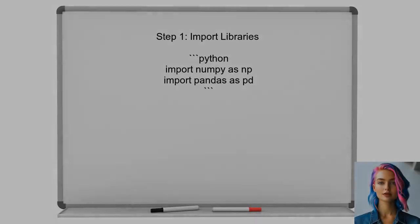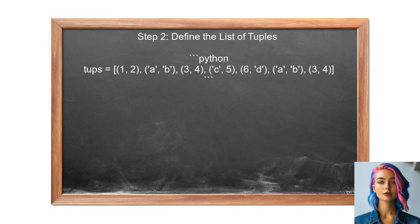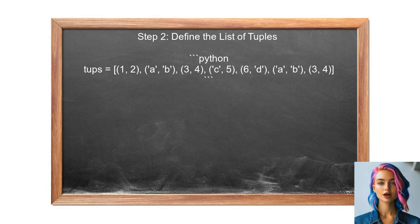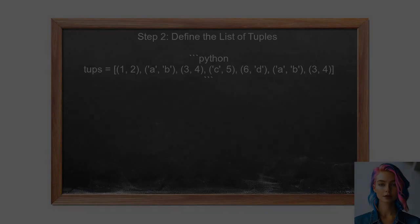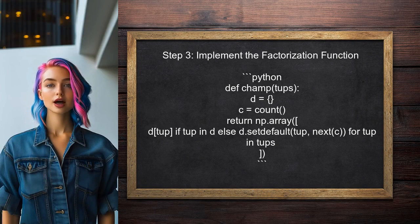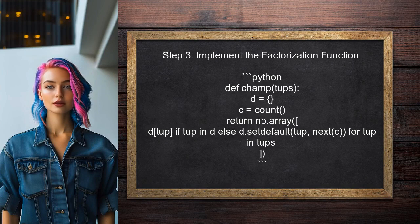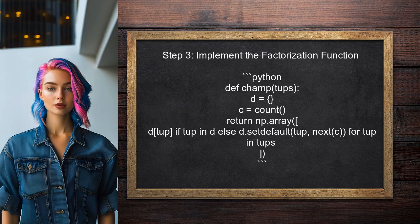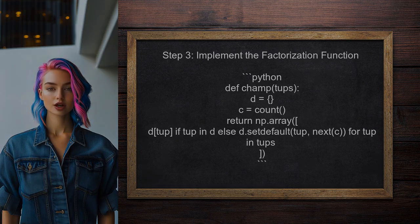To begin factorizing the list of tuples, the user should first import the necessary libraries. In this case, we will need NumPy and Pandas. Next, the user should define the list of tuples that they want to factorize. For this example, we will use the list defined as tups. Now, the user can implement the factorization function. We will create a function called champ that uses a dictionary to map each unique tuple to a unique integer.